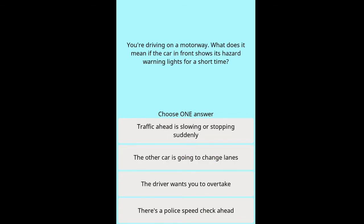Question: You're driving on a motorway — what does it mean if the car in front shows its hazard warning lights for a short time? Options: traffic ahead is slowing or stopping suddenly, the other car is going to change lanes, the driver wants you to overtake, there's a police speed check ahead.